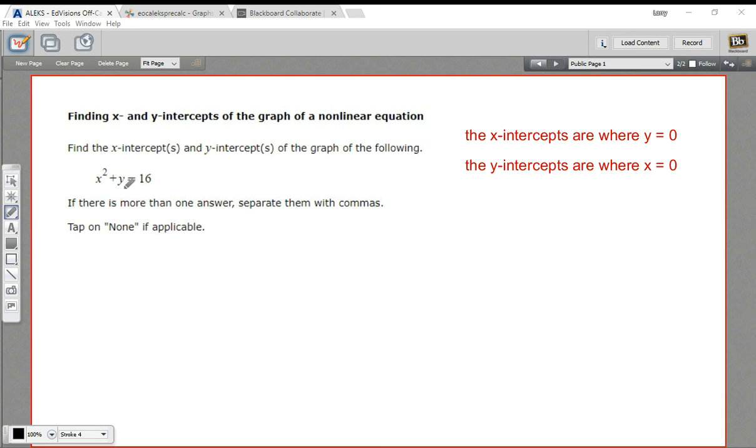I think I'm going to do the second one first, because putting in 0 for x makes this really simple. It would be 0 squared plus y equals 16. So that's just y equals 16. So the y-intercept is y equals 16.